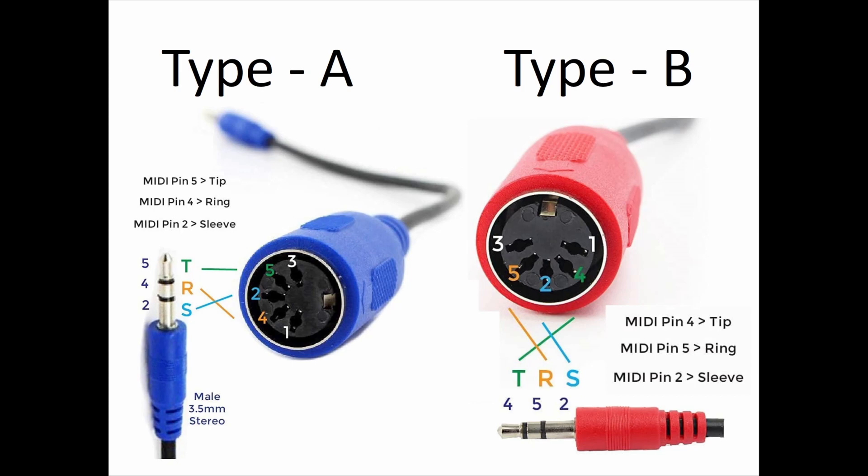So if you need a Type B, you need a Type B. If your equipment needs a Type A, you need a Type A, because they're not interchangeable and they're not compatible.